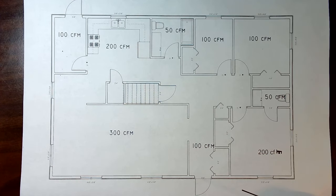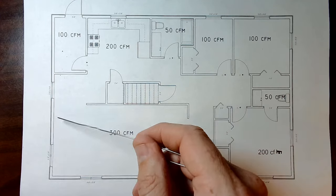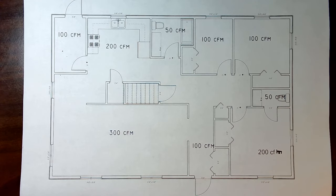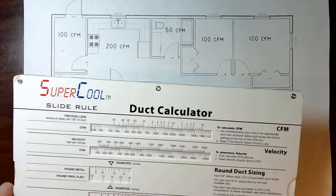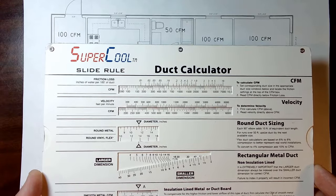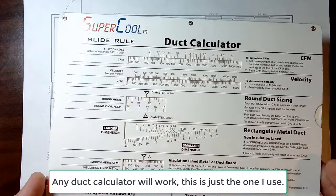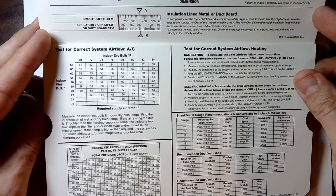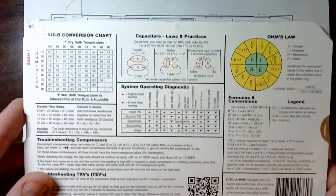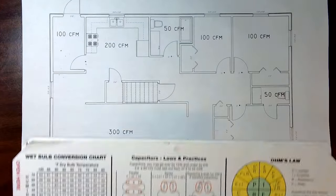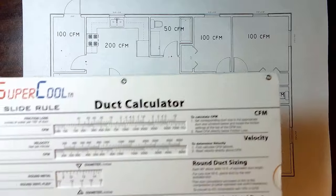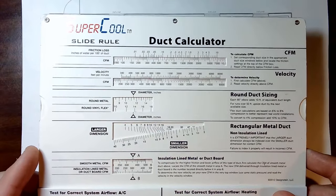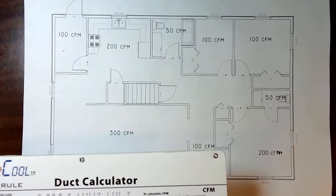We're going to draw on the duct and show you how to lay this out. To know what size of duct we need for the airflow, we're going to use a duct calculator — the super cool slide rule. It's a handy tool with lots of formulas, data tables, and useful information. I do recommend it. Let's look at this top room here.